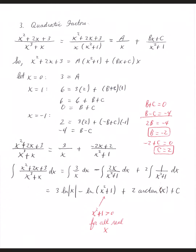Multiply both sides by x times x squared plus 1, which gives x squared plus 2x plus 3 equals A times x squared plus 1, plus Bx plus C times x. Let x be 0: 0 plus 0 plus 3 equals A times 1 plus 0, so A equals 3. Now let x be 1: 1 plus 2 plus 3 equals 6. With A equal to 3, that's 3 times 2 equals 6, plus B plus C. Subtracting 6 from both sides gives 0 equals B plus C.